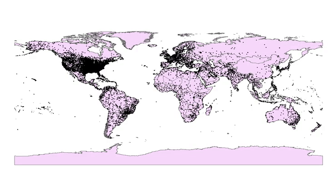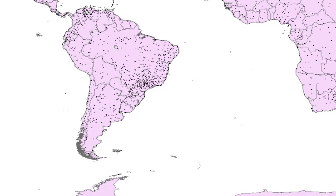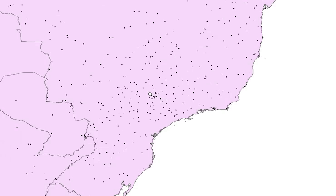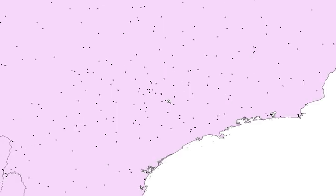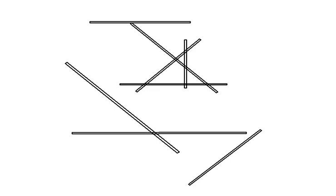Another new layer we're very excited about is our Airport Runways layer. We have added over 15,000 airport runways. When zooming in, you can see the actual geometry of the runways. Here's a detailed section of runway.